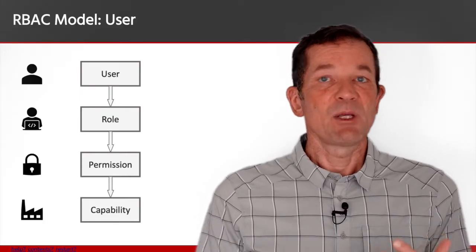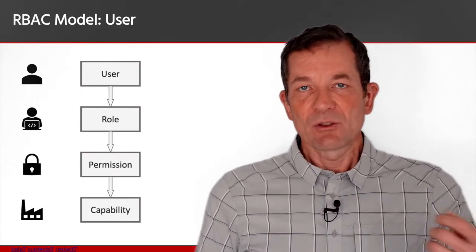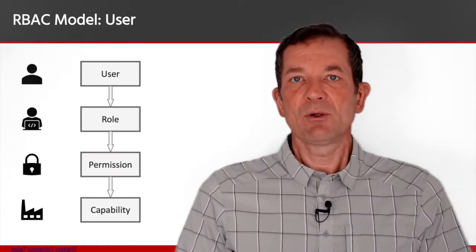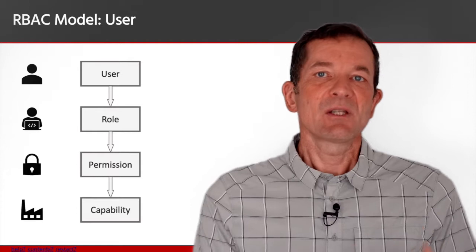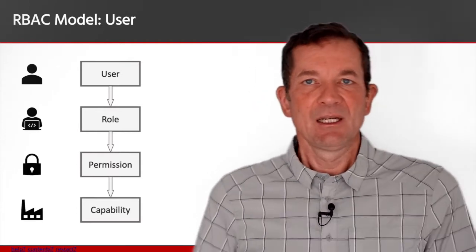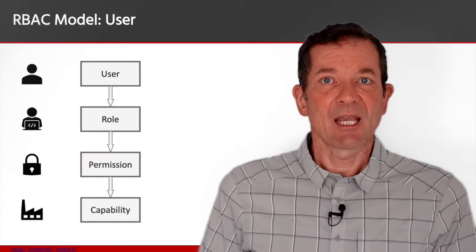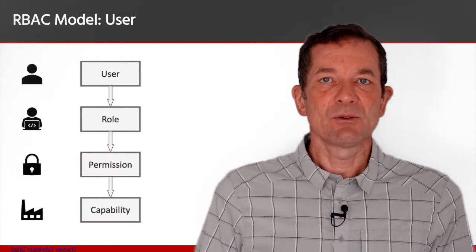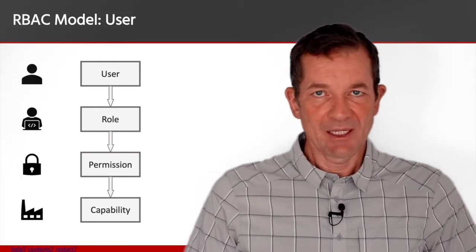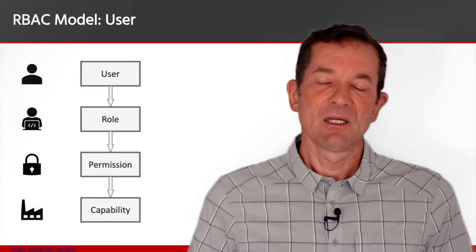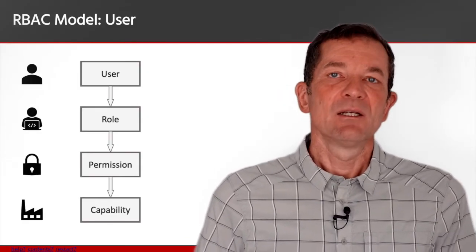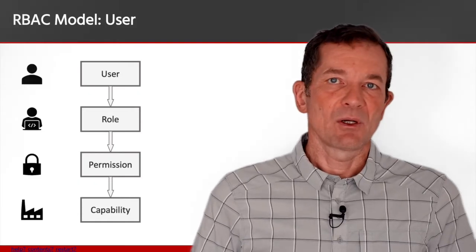If you have people leaving, you just remove the role from those people. If they're transitioning to a different role within the organization, instead of going to the capabilities and removing access for this user for all the capabilities they had access to, all you do is say this user is not playing this role anymore and they don't get access to those things anymore. This is what makes access control with RBAC so nicely scalable for large organizations.